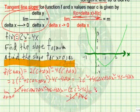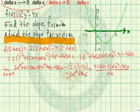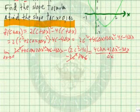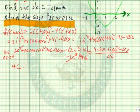It gives us 4c delta x plus 2 delta x squared minus 4 delta x. And we're dividing this by delta x. And what happens here is we're left with 4c plus 2 delta x minus 4.